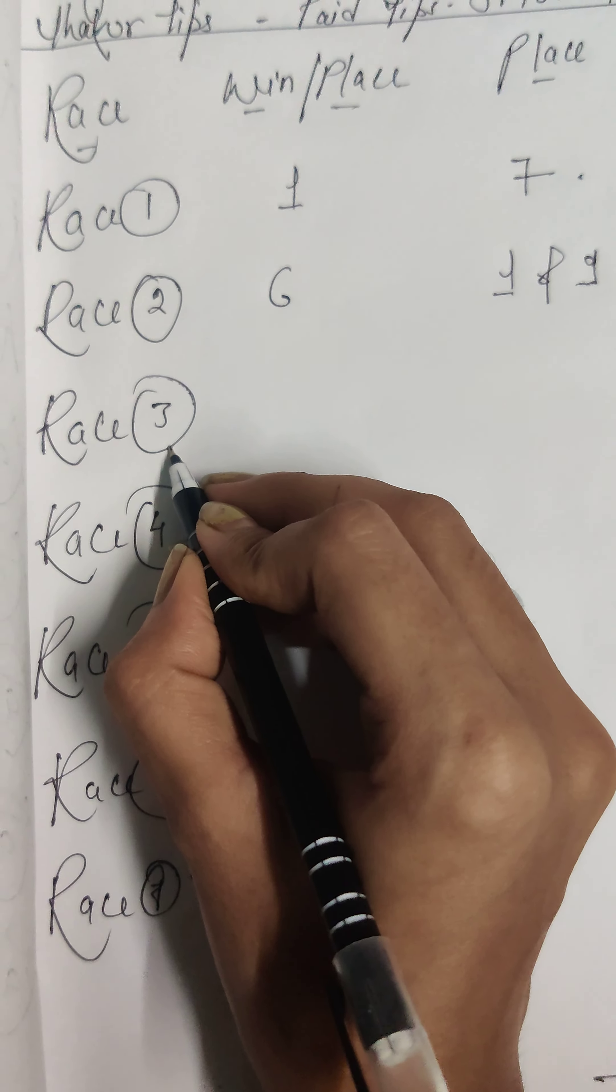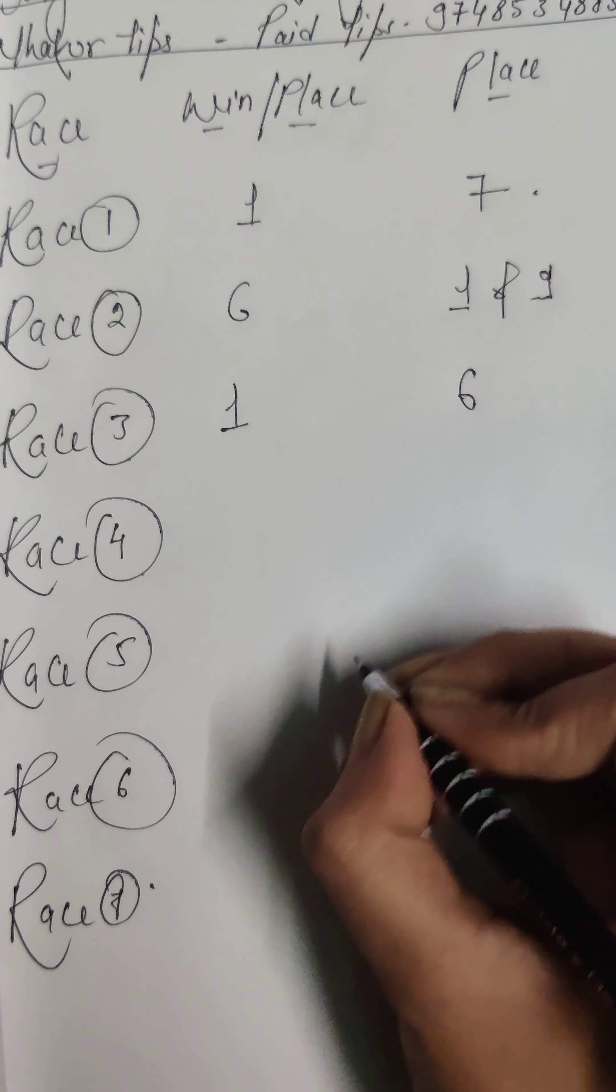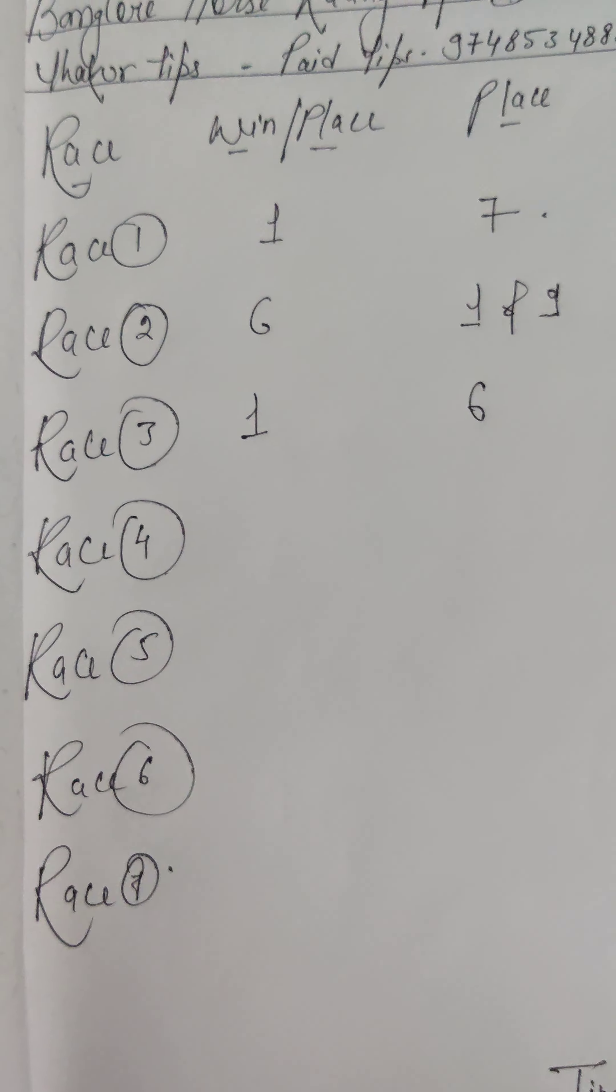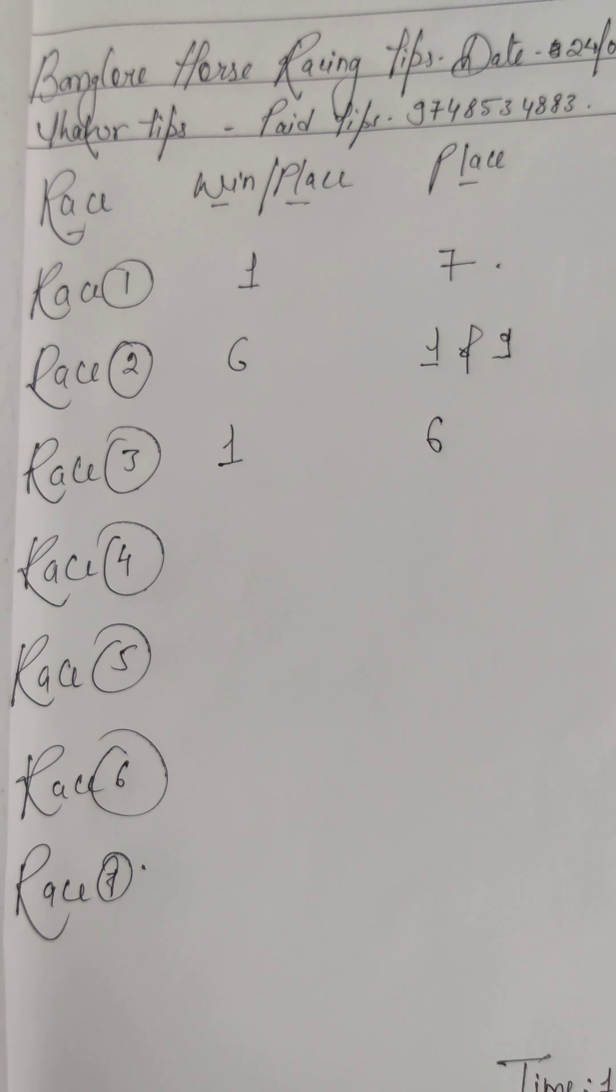Race number 3, my first choice is horse number 1. My second choice is horse number 6.